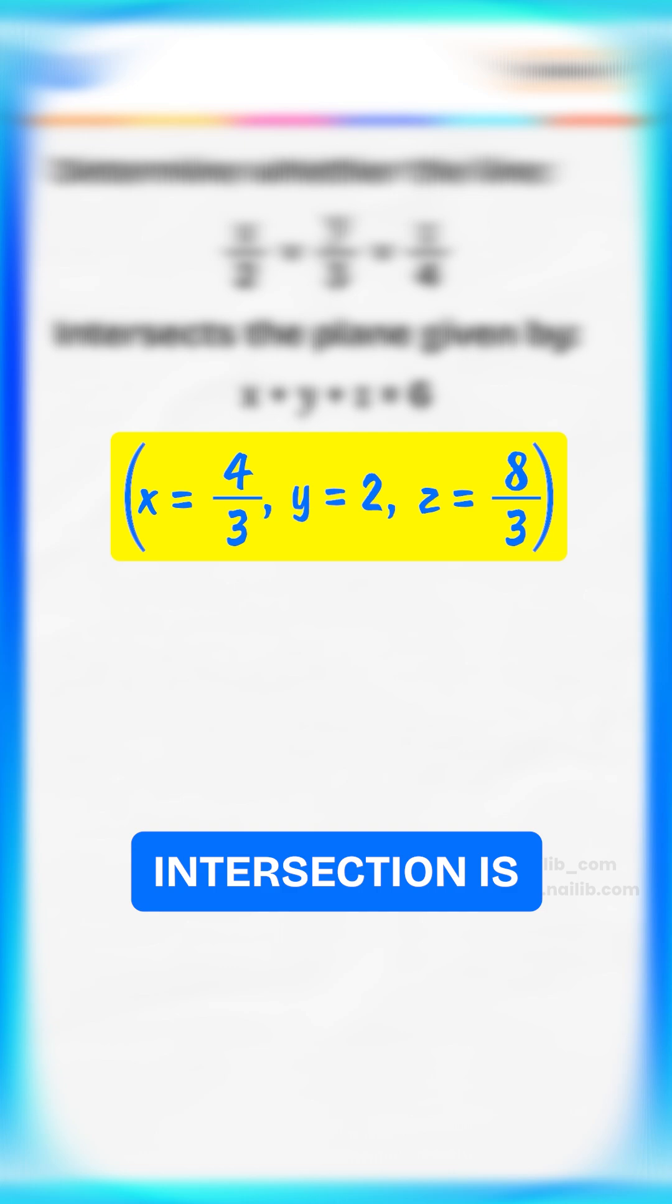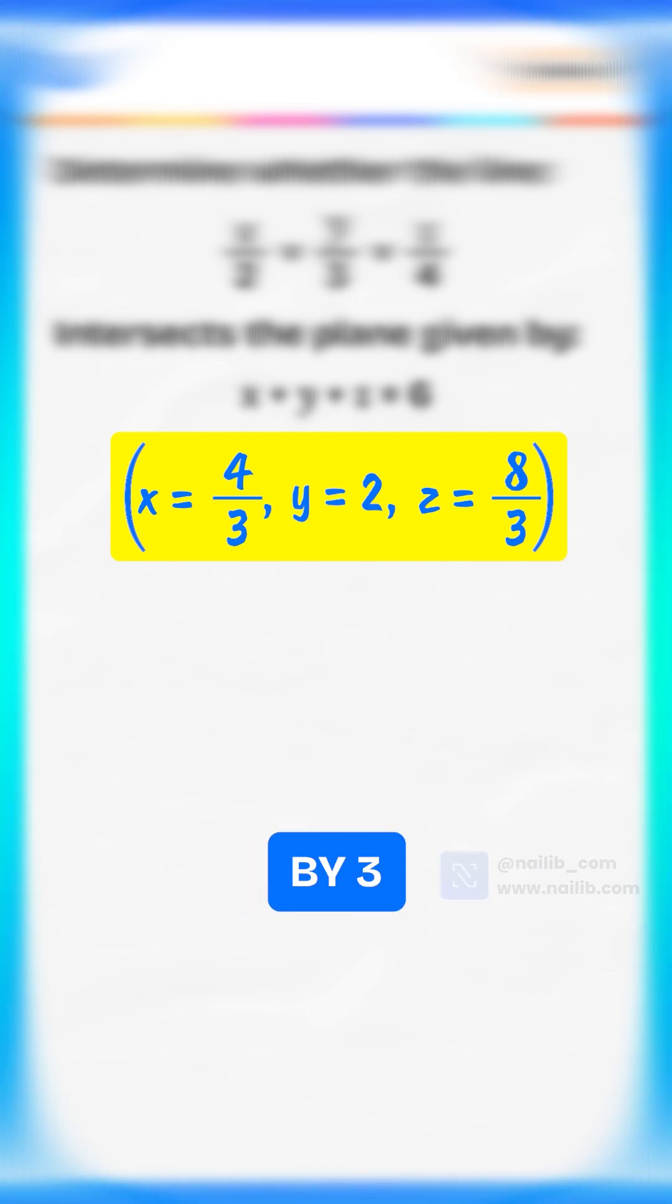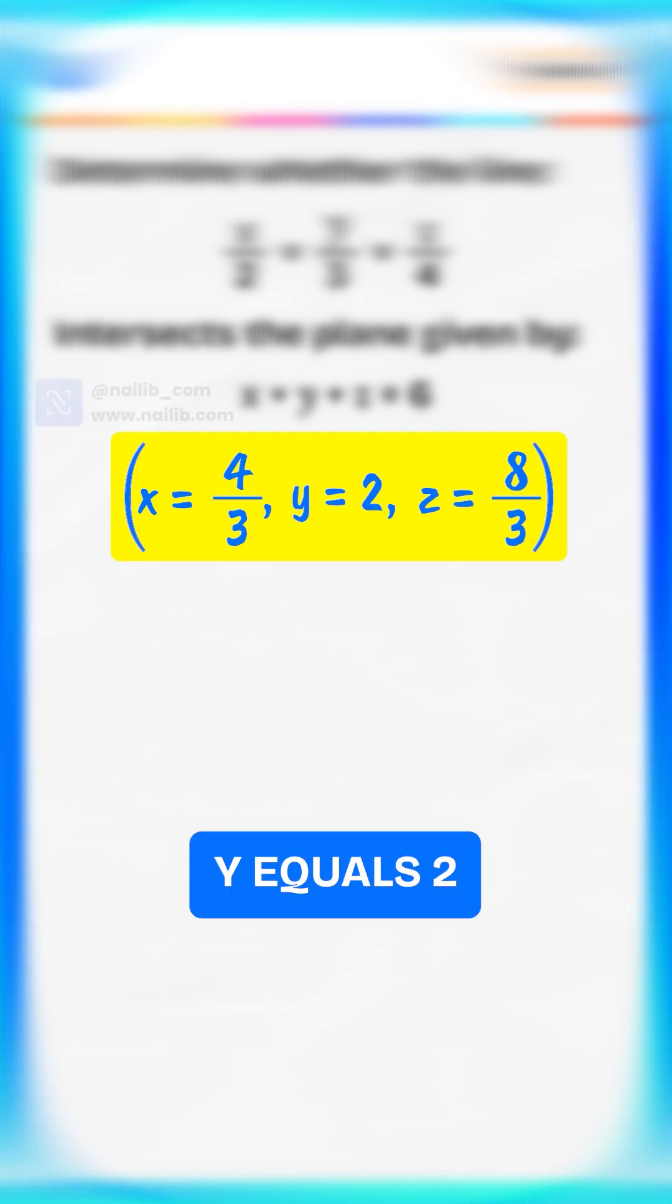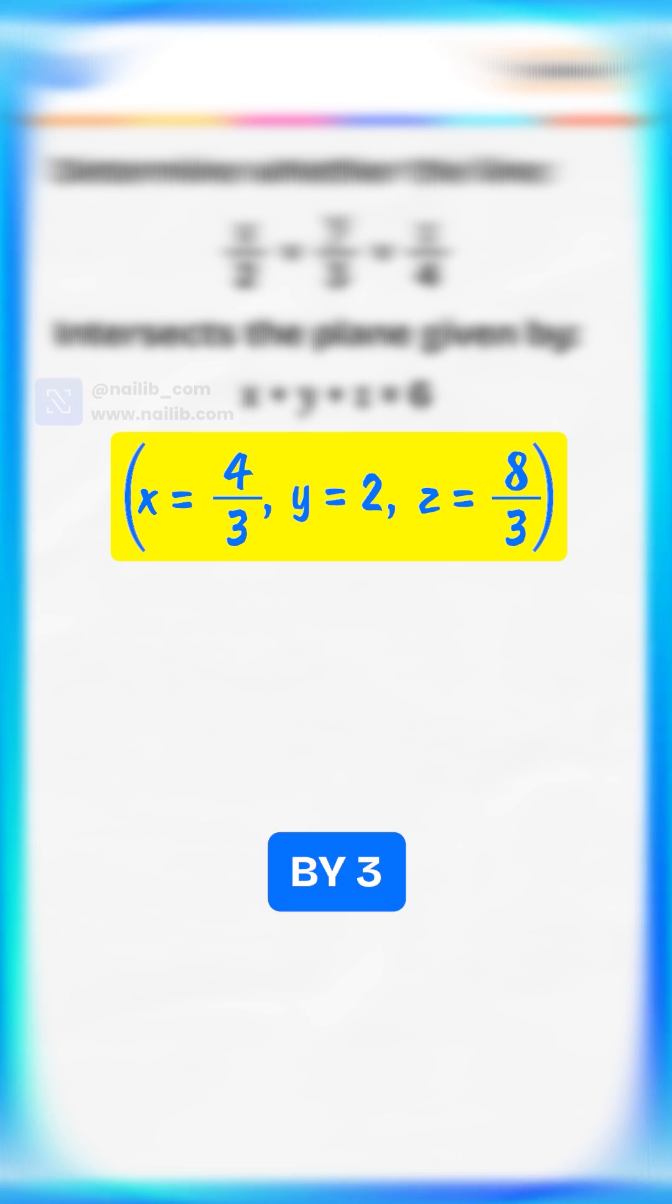The point of intersection is x equals 4 divided by 3, y equals 2, z equals 8 divided by 3.